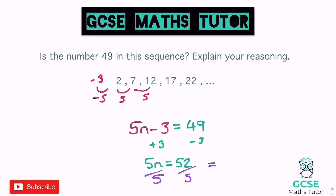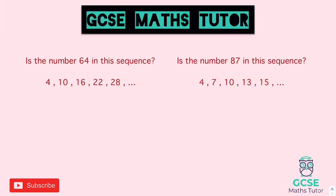Dividing 52 by 5 gives 10.4 — not a whole number. So n equals 10.4, meaning 49 would fall between the 10th and 11th terms. Because n is not an integer, 49 is definitely not in the sequence.